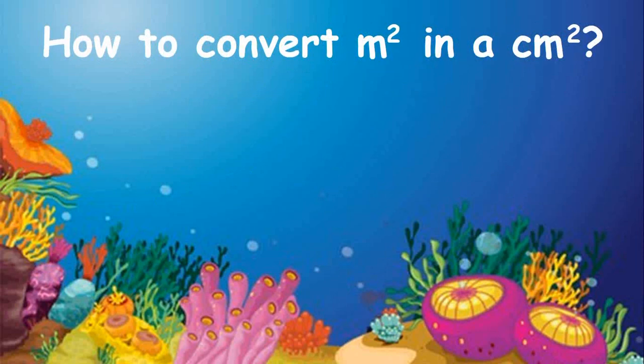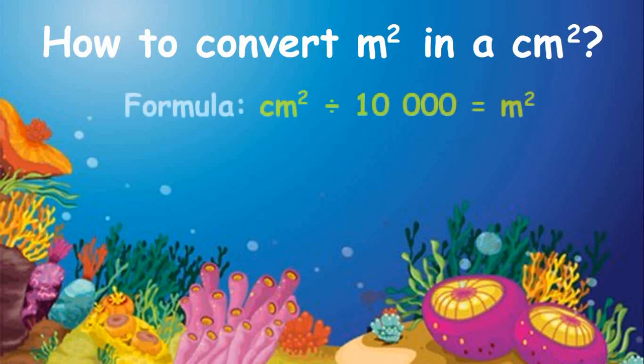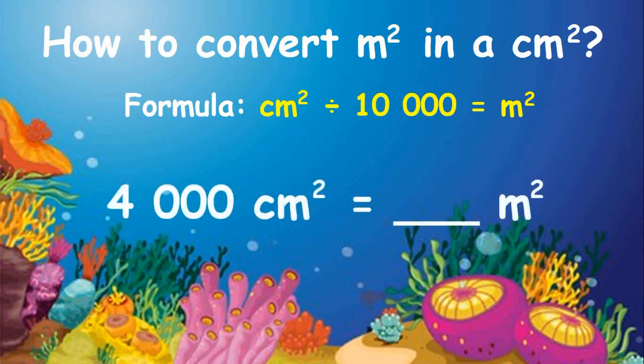Now let's solve the vice versa, where the square centimeter is given. To convert square centimeters to square meters, divide the square centimeters by ten thousand. The formula is: square centimeters divided by 10,000 equals square meters. Let's have an example of 4,000 square centimeters converted to square meters.